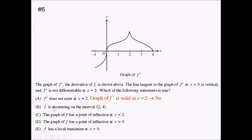Next: f is decreasing on the interval from two to four. On the interval from two to four, f prime is positive. If f prime is positive, that means f would actually be increasing on the interval. So this is a no, because f should be increasing there, not decreasing.